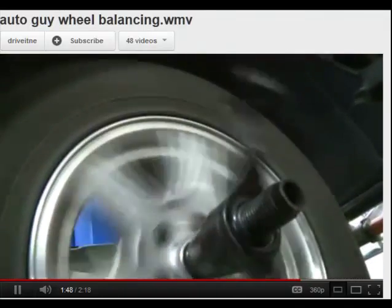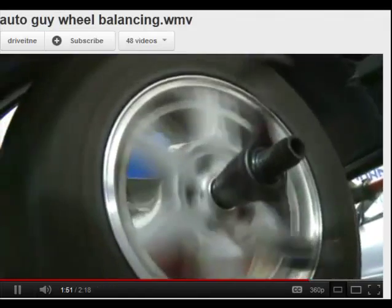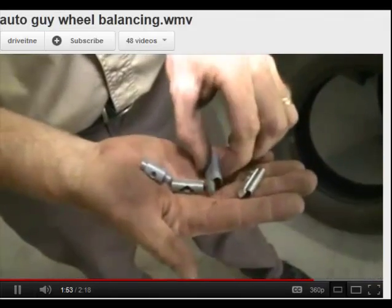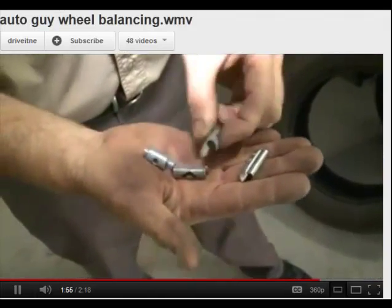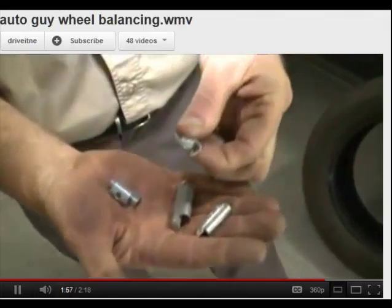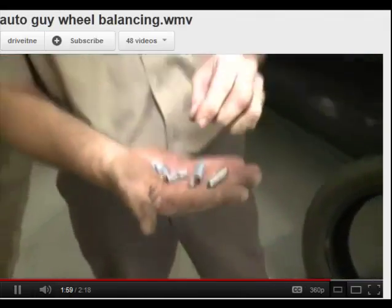Once the weights are installed, the technician runs the machine again to verify that the wheel and tire are perfectly balanced. There are different types of weights and they fit different types of wheels. So your mechanic should be using the type of weight that's designed for your particular wheel. Otherwise not only will they not look good, but they might fall off down the road and then your wheel is out of balance once again. So if you have a shimmy out on the road, get it in right away, get your tires balanced and you should be good to go.